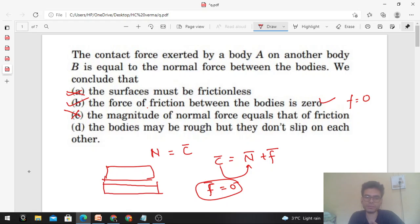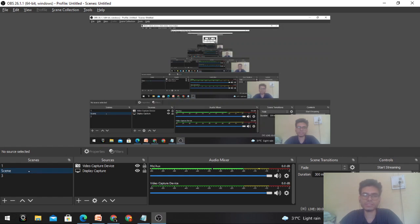Of course, if the bodies are rough but they do not have the tendency to move with respect to each other, then force of friction will not come into action. So option D is correct. So options B and D are correct.